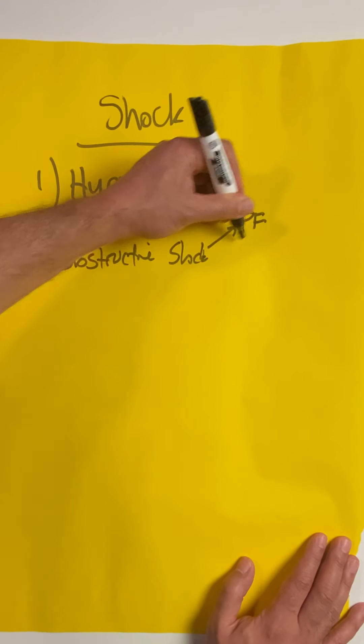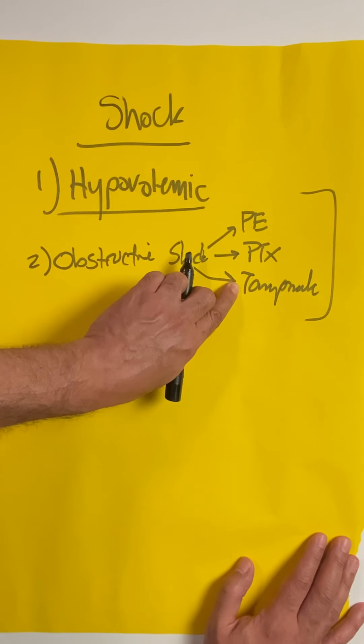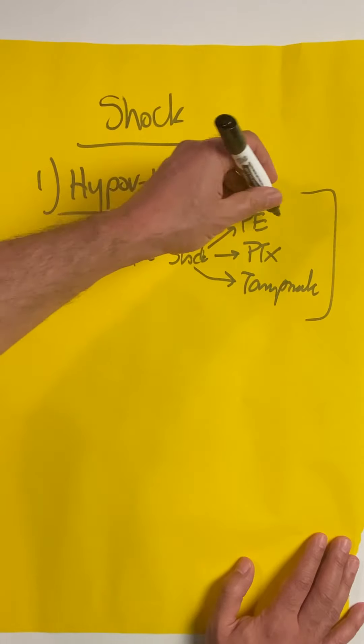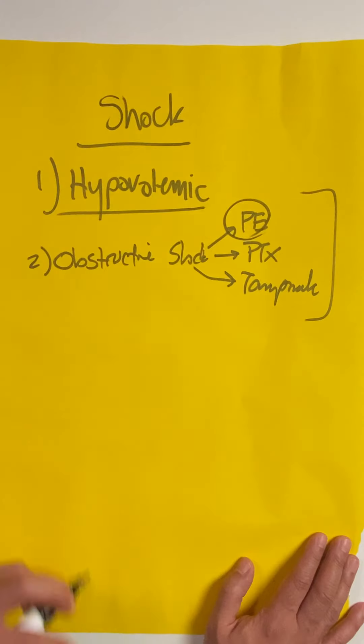For obstructive shock—PE, tension pneumothorax, tamponade—the fix for all these ailments is to address the underlying cause. But while you're waiting to fix these problems, using norepinephrine can be very helpful, especially for pulmonary embolism where it can increase cardiac contractility and increase the afterload.